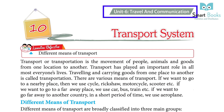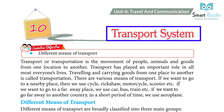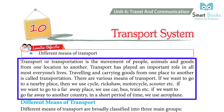Unit 6: Travel and Communication. Chapter 10: Transport System. Learning objective — different means of transport. Transport or transportation is the movement of people, animals, and goods from one location to another. Transport has played an important role in almost everyone's lives. Traveling and carrying goods from one place to another is called transportation.